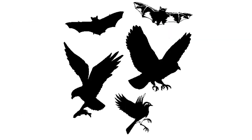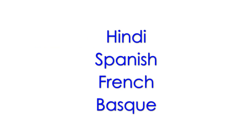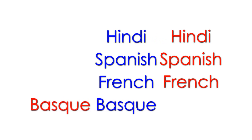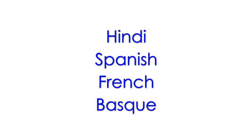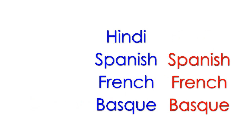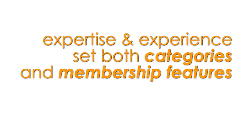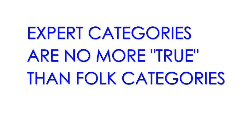Without learning that a bat isn't a bird, for example, there's no reason for us to think otherwise — they are things that fly. So let's look again at these languages: Hindi, Spanish, French, and Basque. To a linguist, we might see three Indo-European languages and one isolate. Basque is the odd item out to us. But to a non-linguist, there are three European languages — Spanish, French, and Basque — and one non-European language, Hindi. That's because experts and non-experts are drawing upon different features to make the classification.